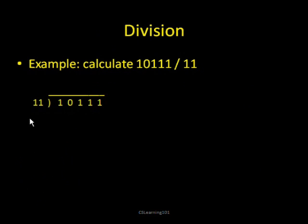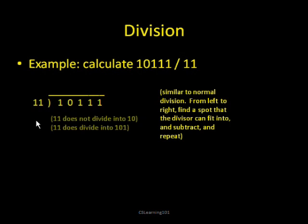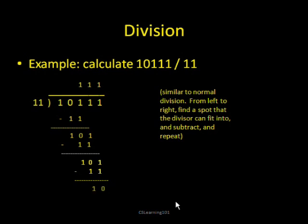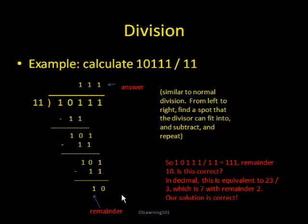Now there's division — again, similar, just keep in mind we're using binary numbers. Does 11 go into 10? No. Does it go into 101? Yes, we write that down. Does it go into 101 again? Yes. We keep doing this. When we're done with division, we get the answer of 111 with a remainder of 10. To check, this question is equivalent to 23 divided by 3, which equals 7 with a remainder of 2, and that matches our answer.